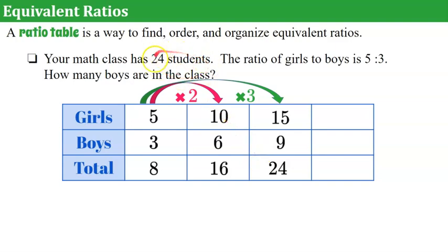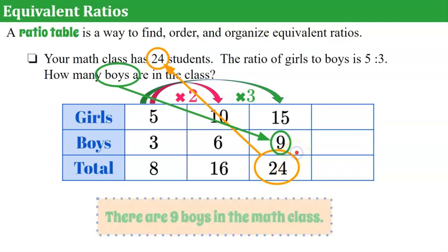I'm noticing here that I now have a total of twenty-four, which is what we were headed for. We wanted to know about a class of twenty-four students. So our question is, how many boys are in this class? Well, here's our boys, nine. If there are twenty-four students, nine of them are boys. So there are nine boys in the math class.